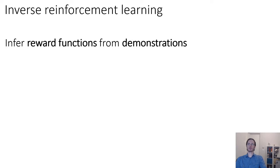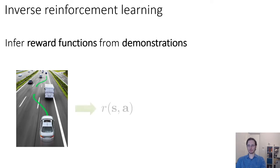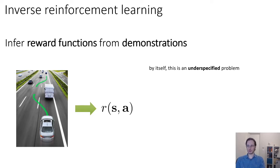Inverse reinforcement learning refers to the problem of inferring a reward function from demonstrations — such as in the driving scenario, where you have a professional driver demonstrate a good driving policy and you want to figure out what reward function to extract to give to your reinforcement learning agent. By itself, inverse reinforcement learning as I've stated it is unfortunately a very underspecified problem, because for any given pattern of behavior there are actually infinitely many different reward functions that explain that behavior. Let's consider this really simple grid world with 16 states to illustrate this.